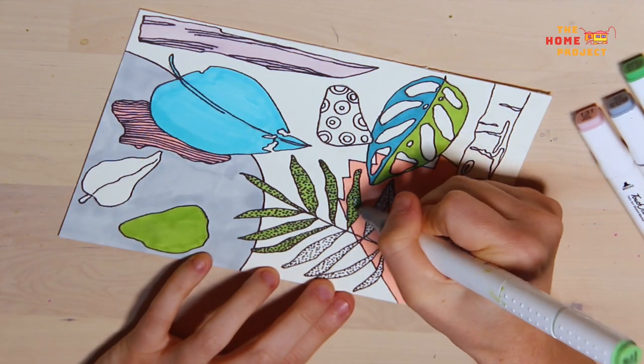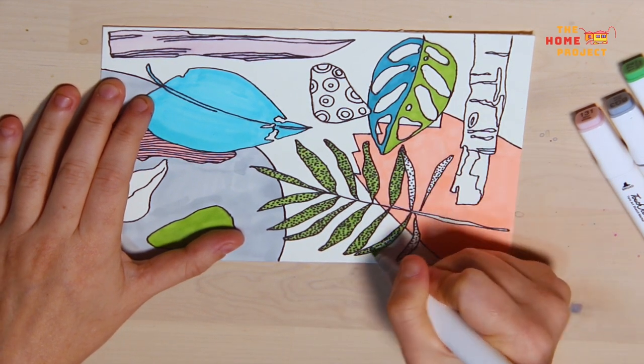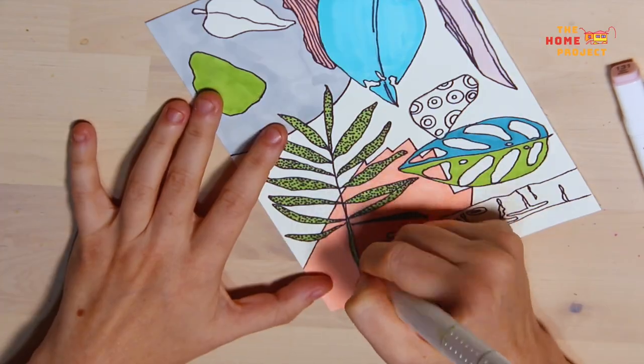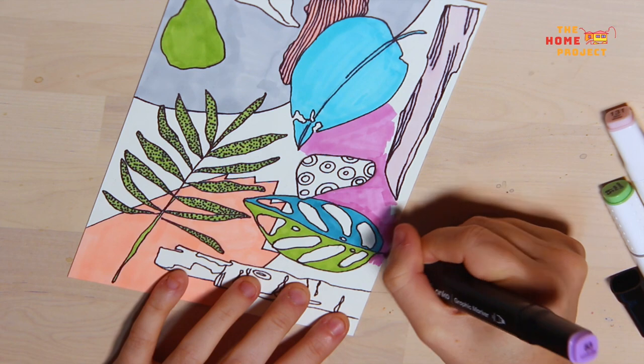So you can color it in with block colors or if you like you can add a bit of shading to it and that's where you color in the dark areas your shadows and leave your highlights really bright. You can also use pattern with the pens as well.